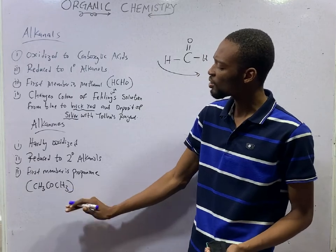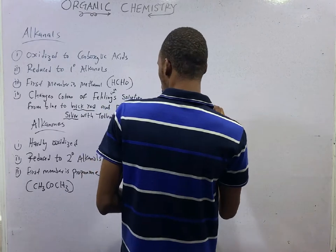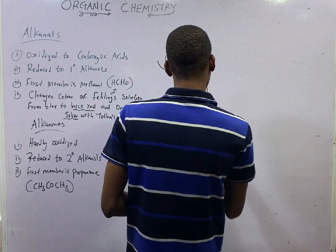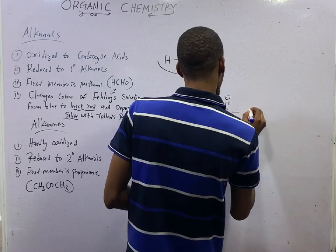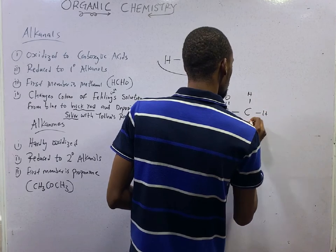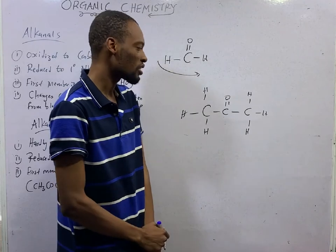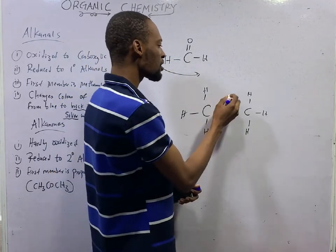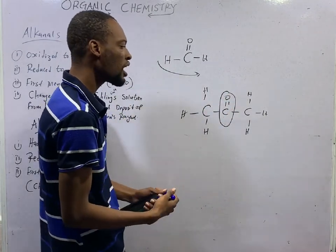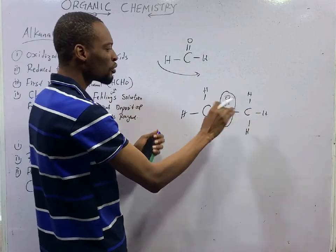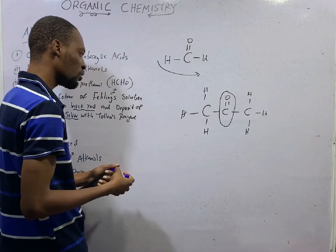The first member of the Ketones is Propanone — there is nothing like Ethanone. Propanone is CH₃–CO–CH₃; the CO is the functional group. The reason we don't have Ethanone or Methanone is that for a Ketone, this carbonyl group must be between two alkyl groups. So you therefore need to have two extra alkyl groups to place it in the middle. This is the simplest Ketone: Propanone.